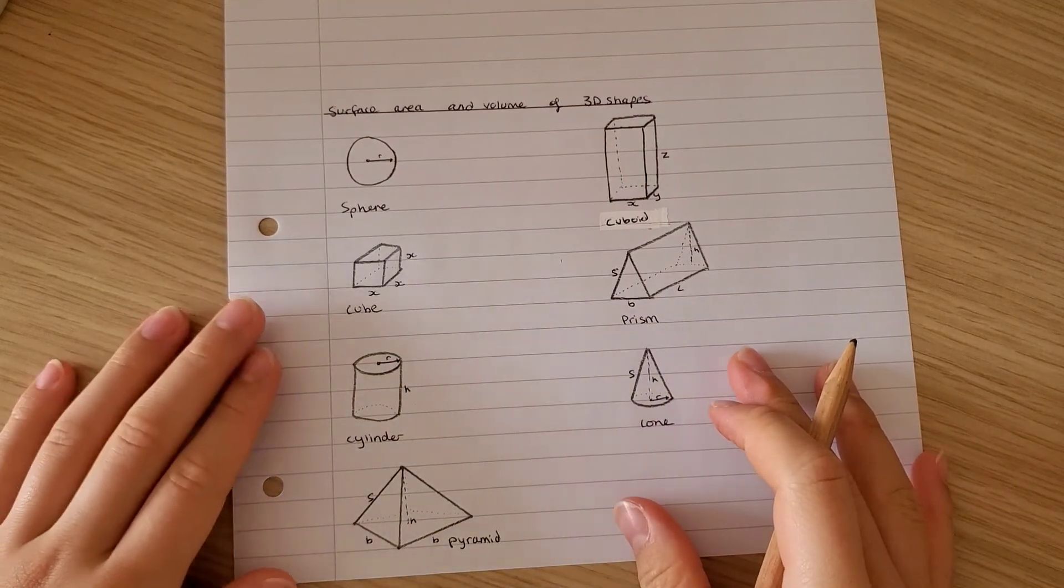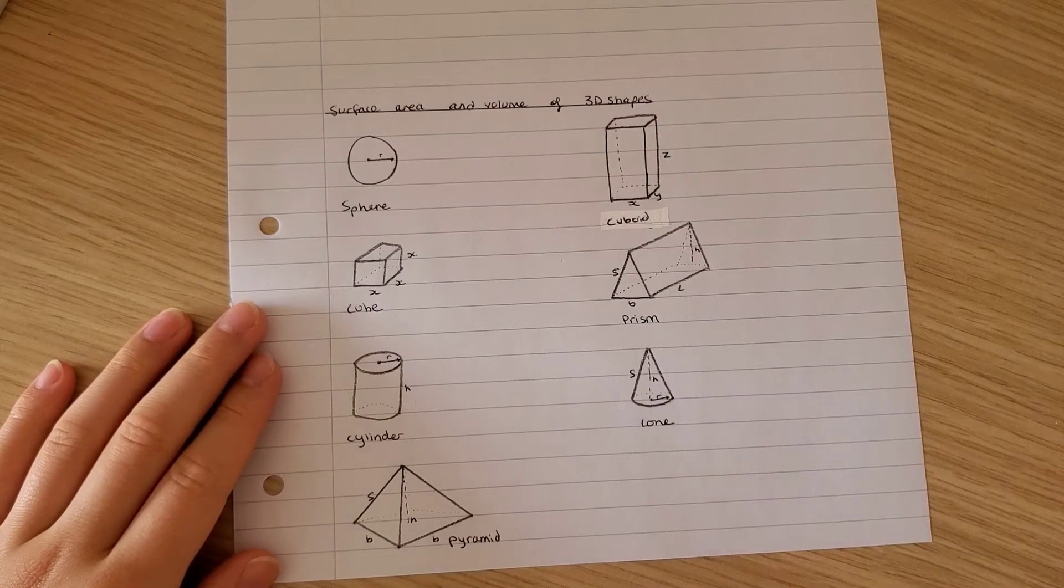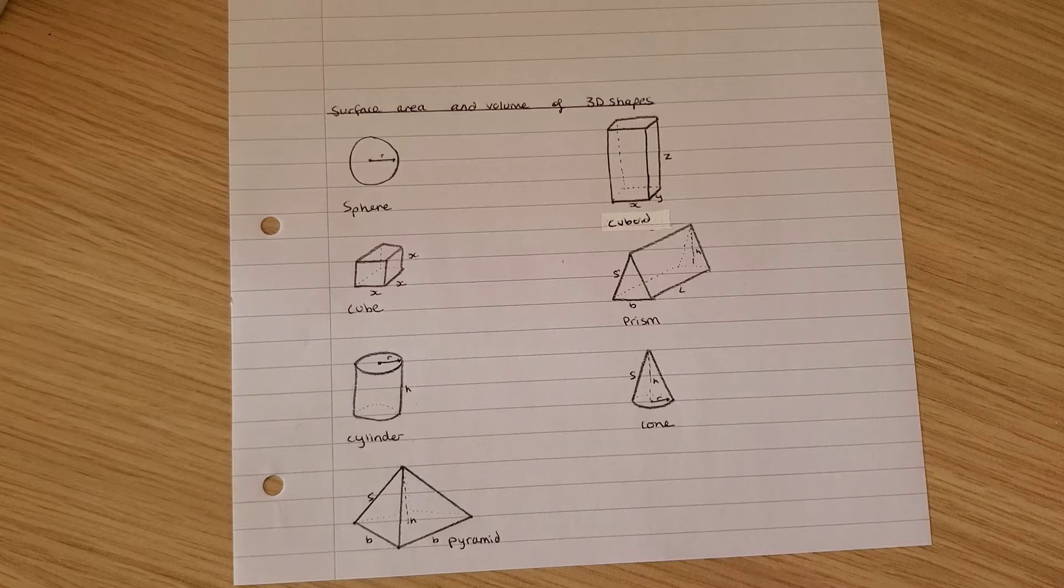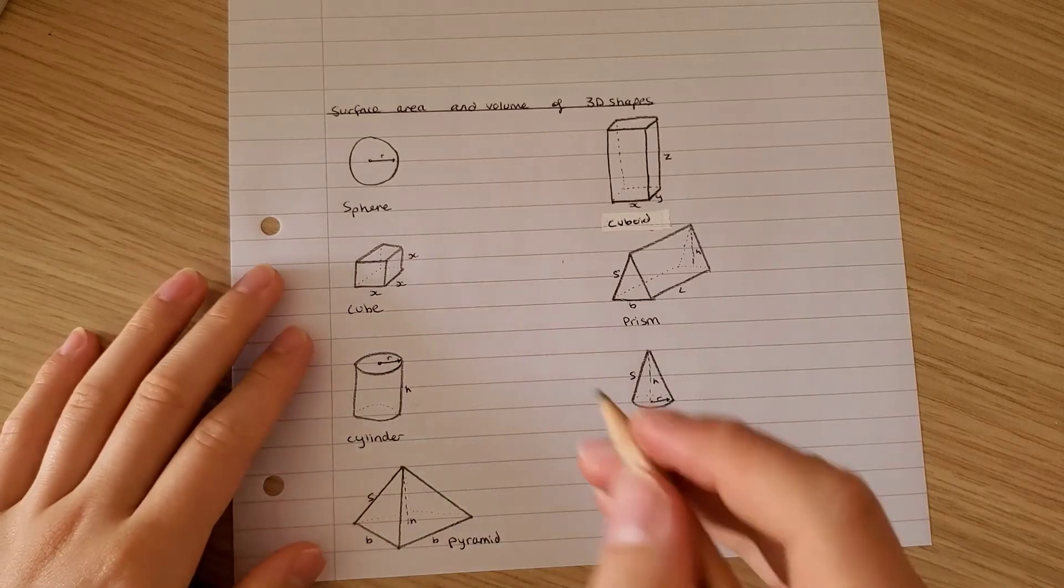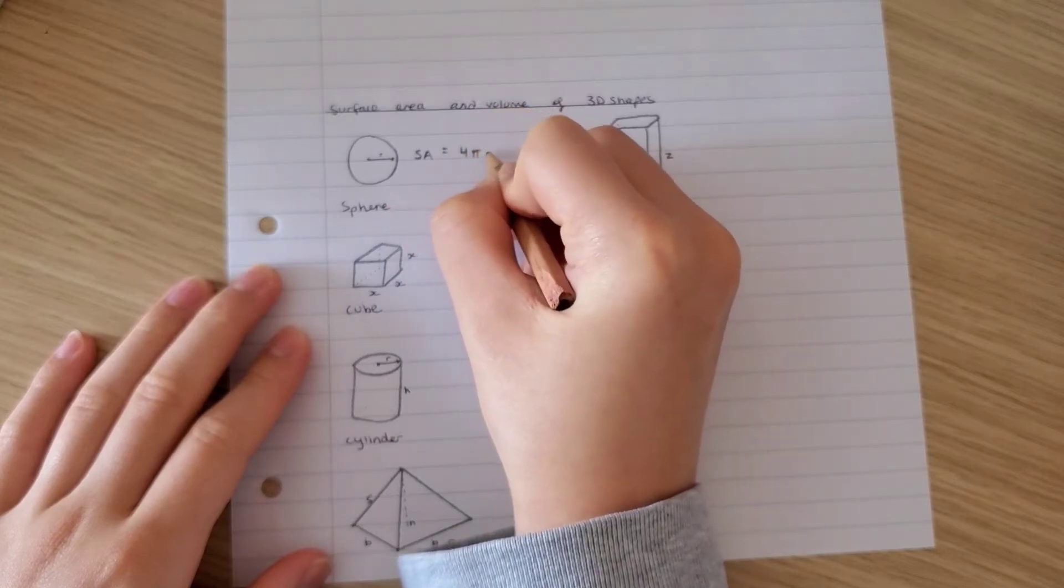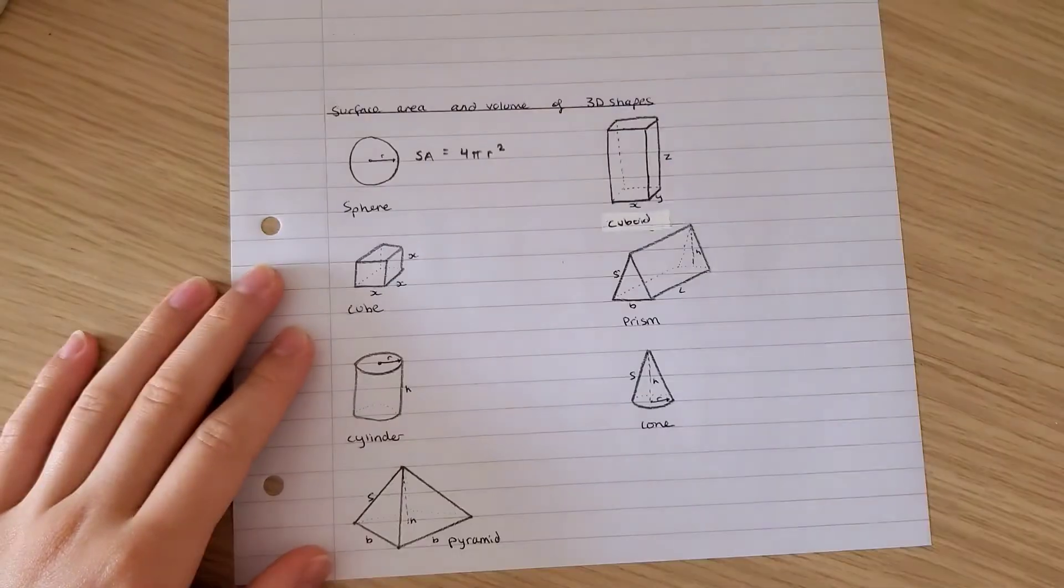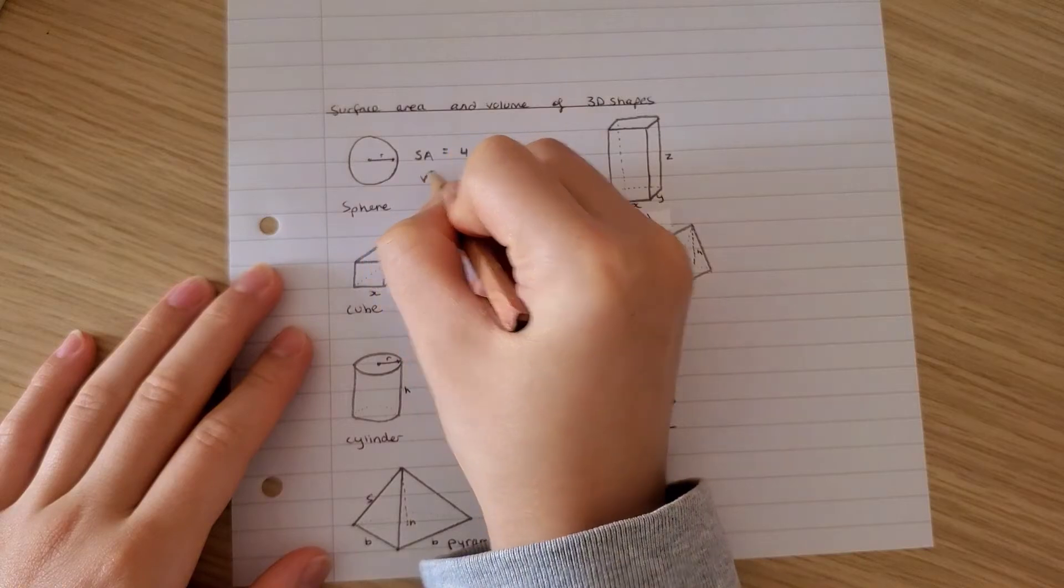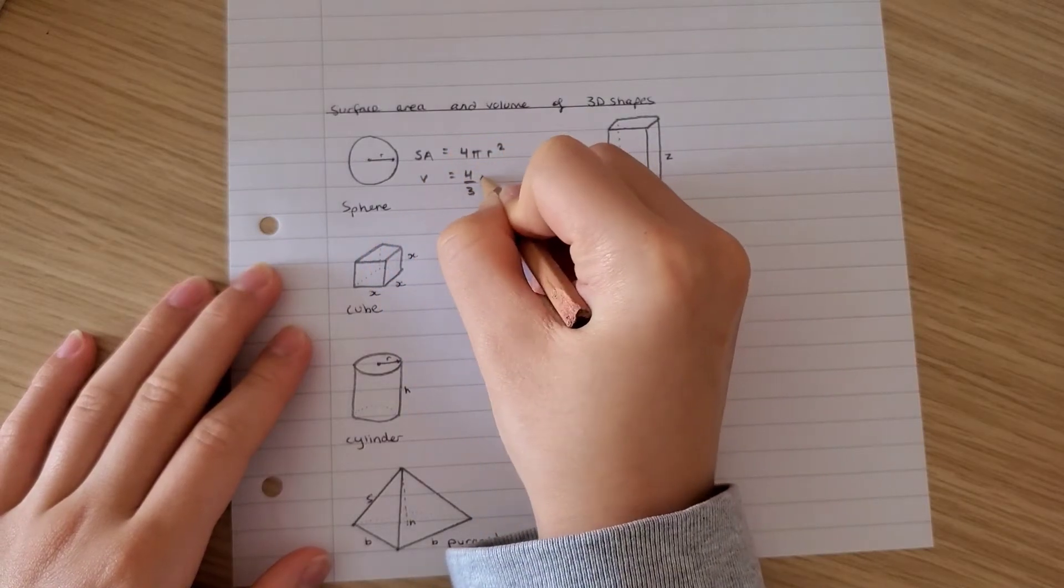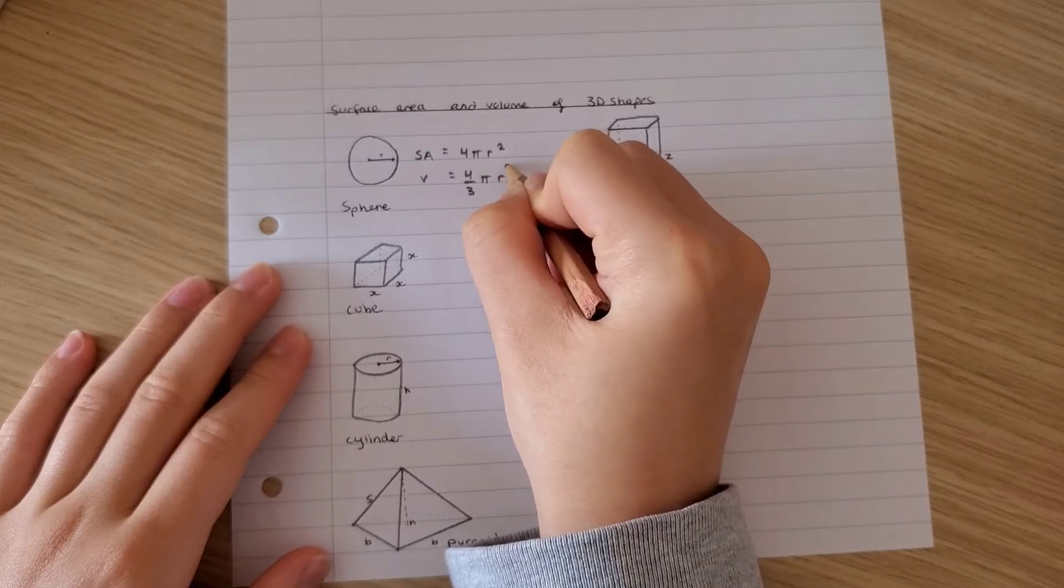For 3D shapes we would want to find out the surface area and the volume. So the surface area of a sphere can be calculated by the equation 4 pi radius squared. The volume is 4 over 3 pi radius cubed.